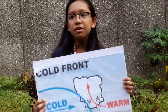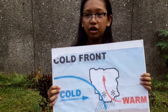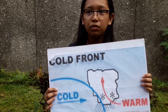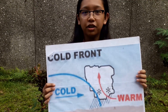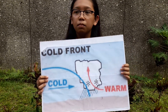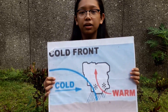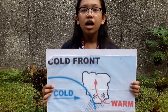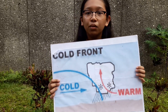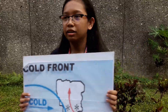The movements of air from high to low are associated with fronts. Fronts are boundaries between air masses of different temperatures. The red symbol is called the warm front, because it is where warm air moves in and replaces cold air. The blue symbol is called the cold front, where cold air moves in and replaces warm air.